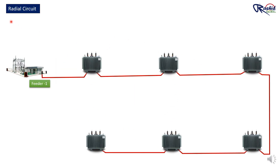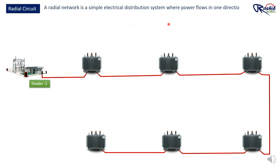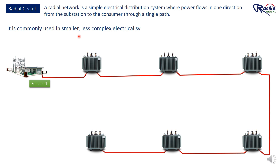First, let's talk about radial network. A radial network is a simple electrical distribution system where power flows in one direction from the substation to the consumer through a single path. It is commonly used in smaller, less complex electrical systems, especially in residential and rural areas. In this setup, each consumer or load is connected to a single source of power.